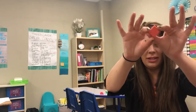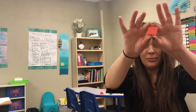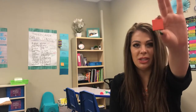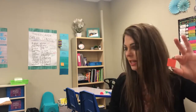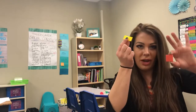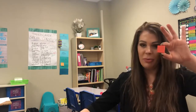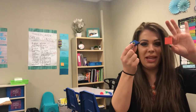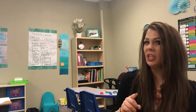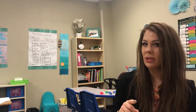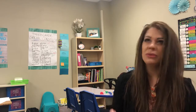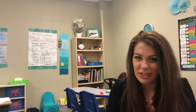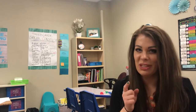A square is special because it's a combination of a rectangle — four right angles — and a rhombus — all sides being the same length. Do you think you could sort which shape goes with which definition? It's kind of tricky, but I think you can do it. Let's try!